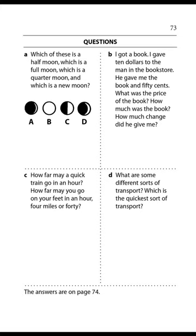How far may a quick train go in an hour? A quick train may go a hundred miles in an hour. How far may you go on your feet in an hour — four miles or forty? You may go four miles but not forty. What are some different sorts of transport? Ships, trains, buses, and airplanes are different sorts of transport. Which is the quickest sort of transport? The airplane is the quickest of these.